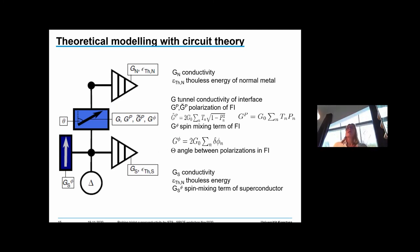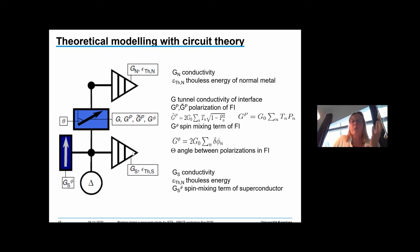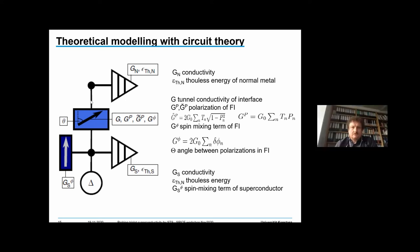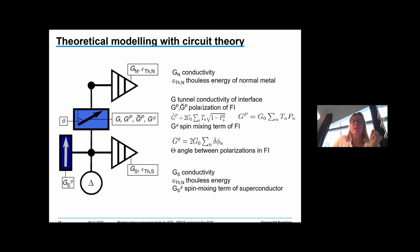Now I come to the theory — how can we implement the conjecture of triplet formation in our system. The circuit theory model developed by Wolfgang's group has a superconducting node described by gap delta, the normal conductivity, the Thouless energy of the superconductor, and possibly some spin mixing in the superconductor. Then there is a normal node described by its Thouless energy and normal conductivity, with the ferromagnetic insulator in between characterized by the tunnel conductivity G_T and several parameters describing spin polarization and spin activity.